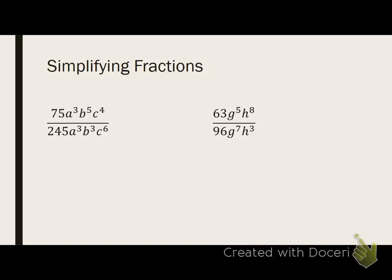So when I reduce the number part, 15 over 49, what happens to my A's? What happens to my A's? They cancel each other out. There is no A. They cancel. What happens to my B's? Two B's squared goes on top. What about my C's? What about my C's, guys? C squared goes on the bottom. Who got that right?